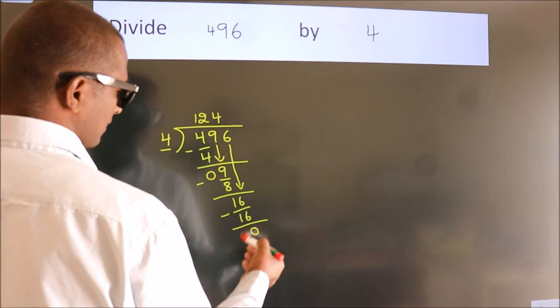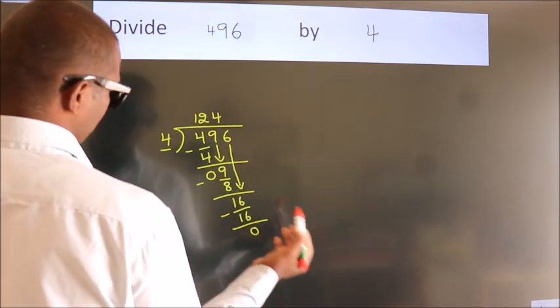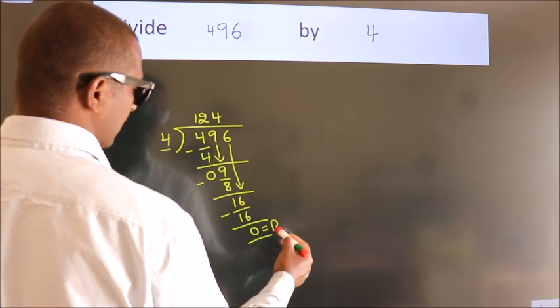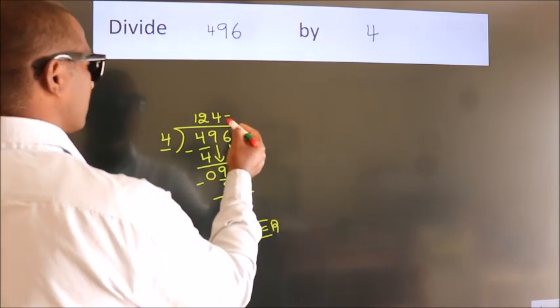After this, no more numbers to bring it down. So we stop here. This is our remainder. This is our quotient.